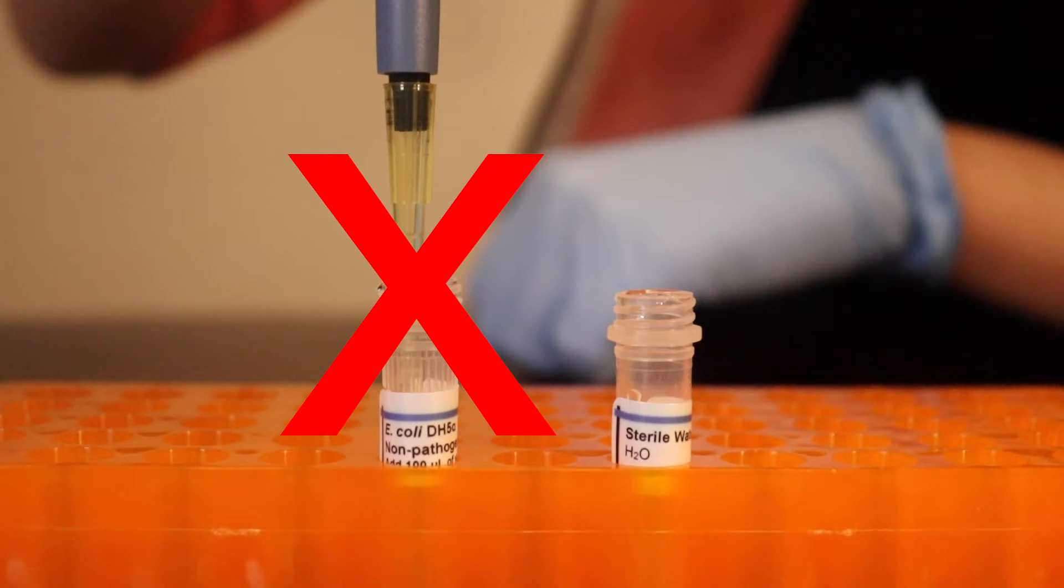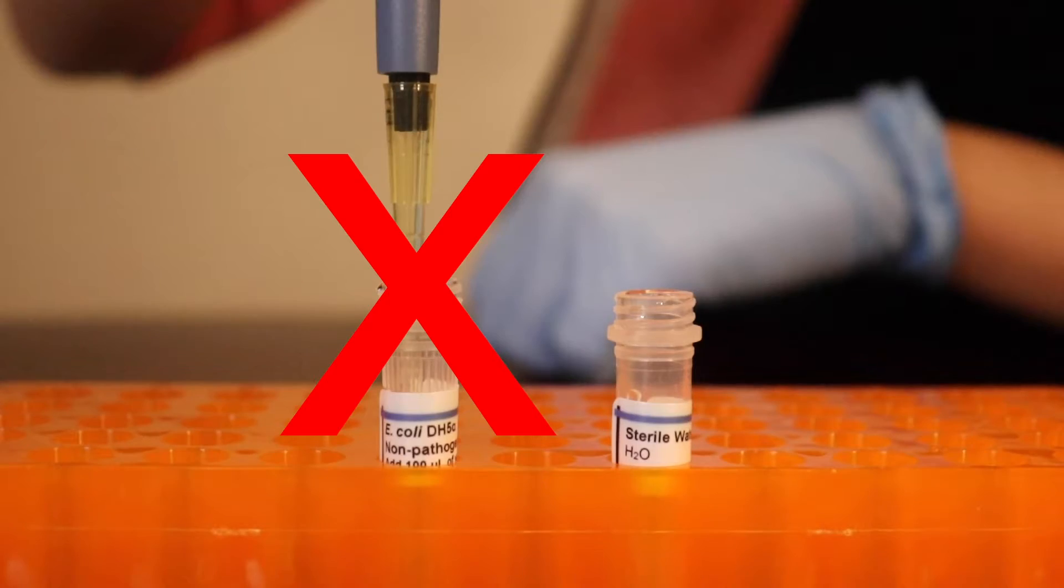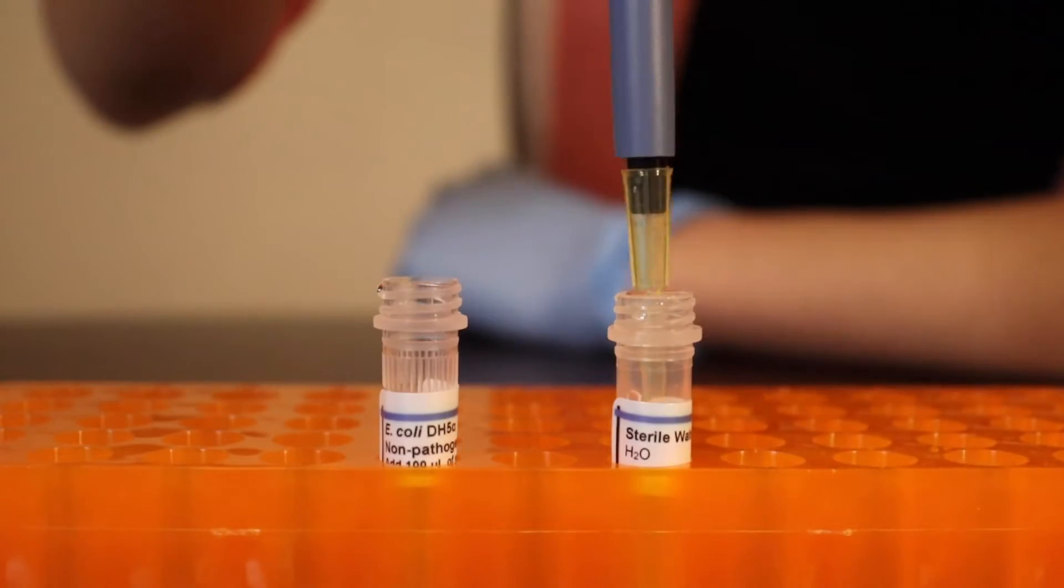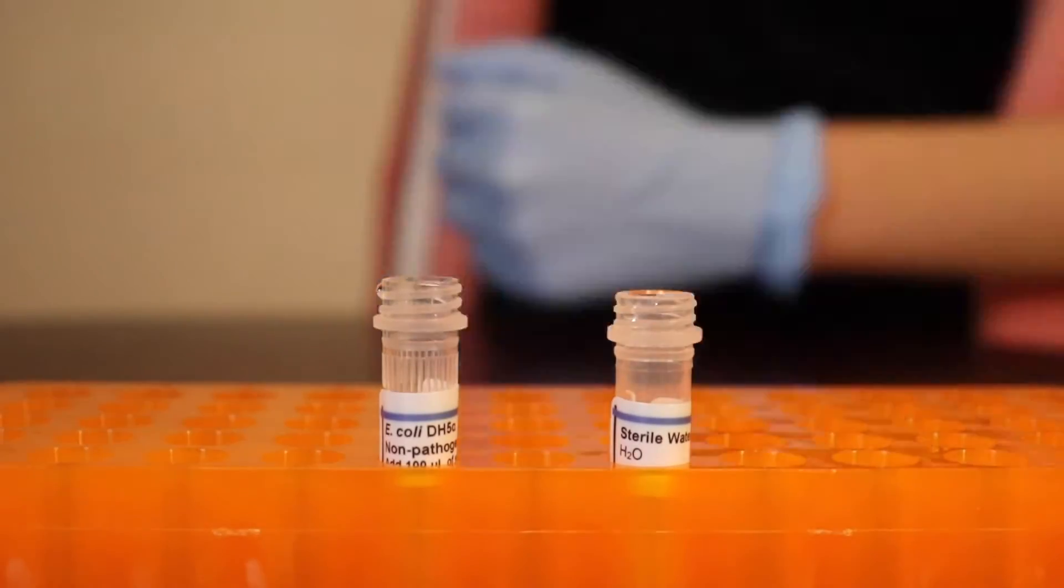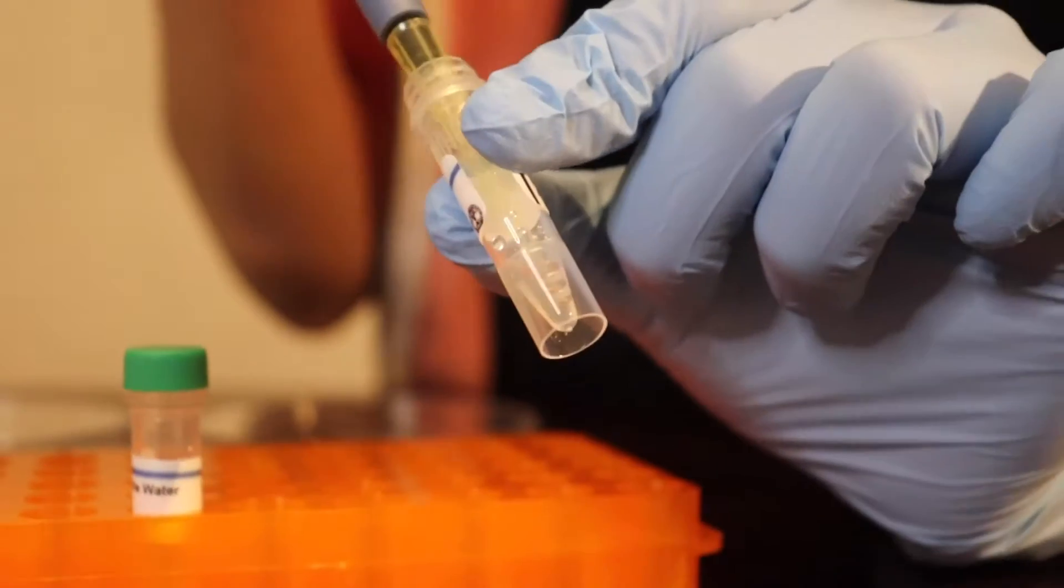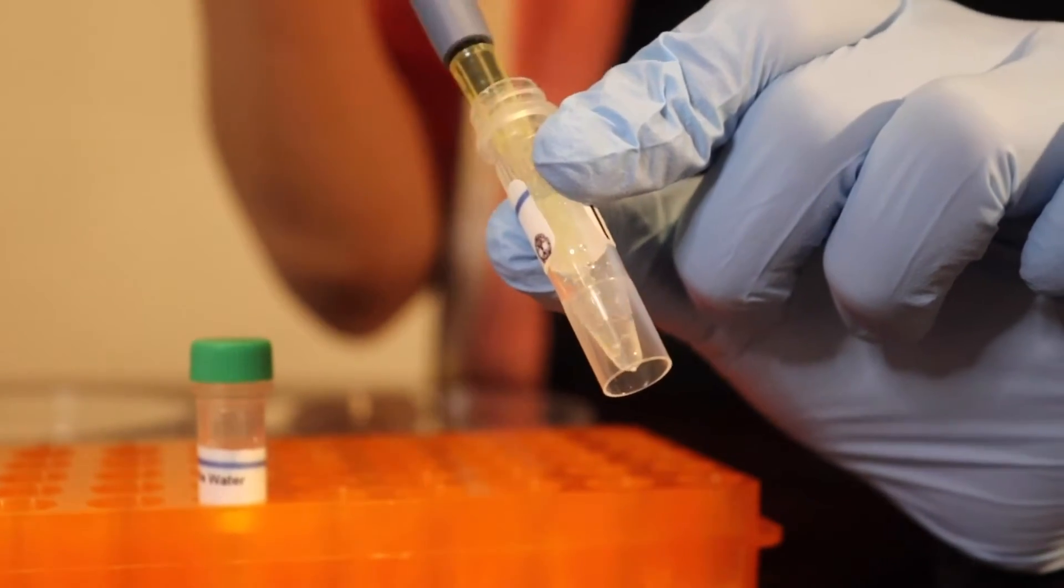Here's the second mistake I made: I contaminated the pipette tip with the E. coli bacteria, so now I have to change the tip to continue pipetting the sterile water. Make sure when you're pipetting to keep the tip above the container so you don't contaminate it. Just using the pipette to mix the water and bacteria.